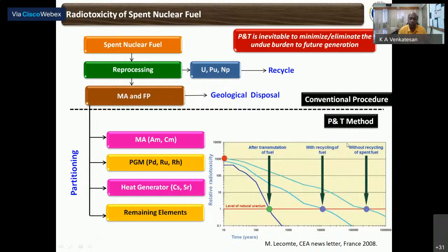So if we can also separate cesium and strontium for medical applications, then there is a possibility that the problem associated with the high-level liquid waste may not exist, because the radio-toxicity of the remaining waste after the separation of cesium and minor actinides will be negligible. The partitioning and transmutation strategy has been suggested as one of the safest methods.